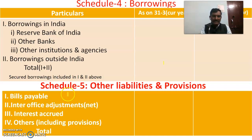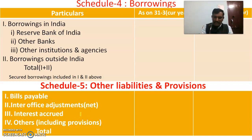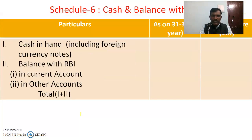Schedule 5 relates to Other Liabilities and Provisions, where we have items like bills payable, inter-office adjustments (net), interest accrued, and other items including provisions. The total is to be made under Schedule 5 as Other Liabilities and Provisions.